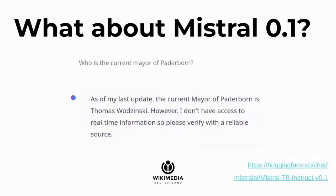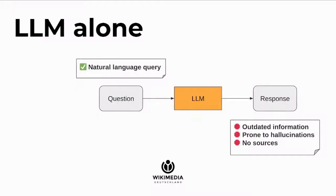If we ask Mistral — a relatively small large language model with 7 billion parameters and openly licensed weights — who the current mayor of Paderborn is, it doesn't even get the name correct, though it does acknowledge it may not have real-time information. So asking a language model alone gives us natural language access to data, but we may get outdated information, hallucinations, and no source references.